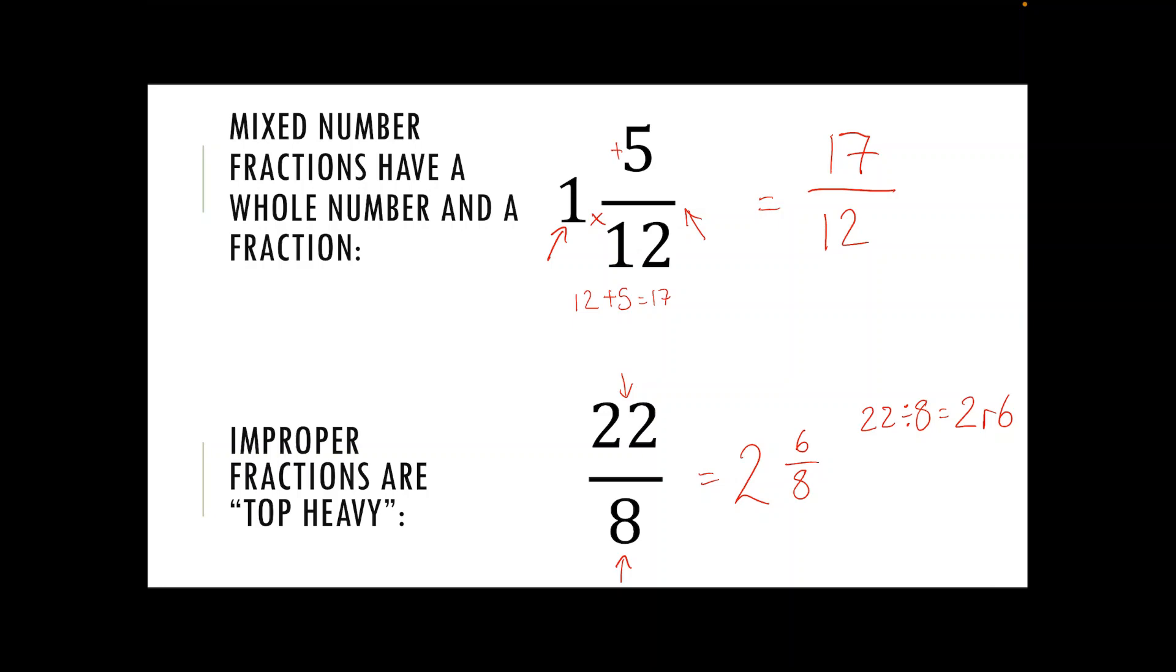Again my denominator does not change, so my whole number is the first part of my answer and the remainder goes on the top of my fraction. In this example here we can simplify that by using our two times table to divide down, so it's actually two and three quarters.